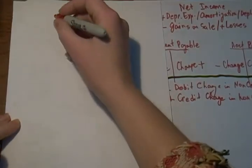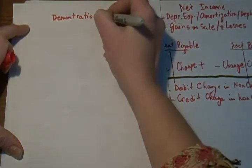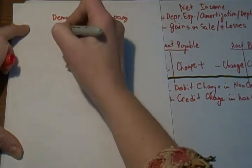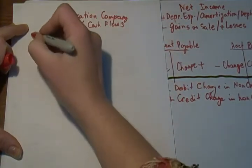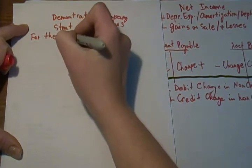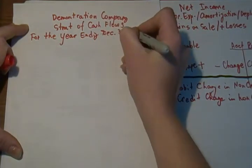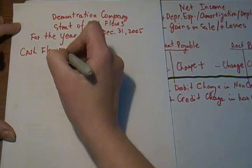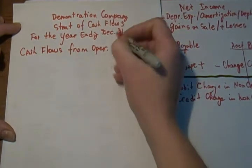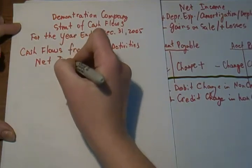I'm going to grab a blank piece of paper and start writing out my statement. Here is the demonstration company to start my title, and I've got 'Statement of Cash Flows' — abbreviating — for the year. It's very important: it's for the period, for the year ending December 31st, 2005. And we are preparing cash flows from operating activities.